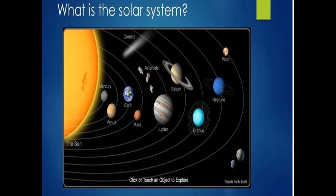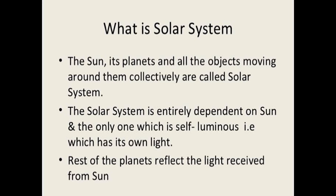What is a solar system? We already know that we are living on the planet Earth, and our Earth is one of the eight known planets and is a member of the large family in space. The sun, its planets, and all the objects moving around them collectively are called the solar system. The solar system is entirely dependent on the sun, which is the only self-luminous body, meaning it has its own light. The rest of the planets reflect the light received from the sun. So, the solar system is the family of the sun and its eight planets.